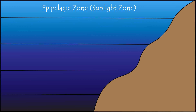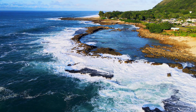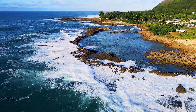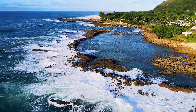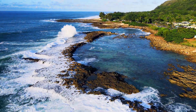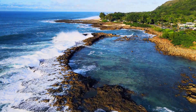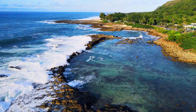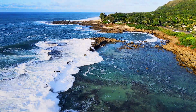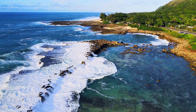The first layer of the ocean is called the epipelagic zone, or the sunlight zone. This is the top layer of the ocean, extending from the surface down to around 200 meters or 656 feet. It receives the most sunlight and is where most of the ocean's plant and animal life, including phytoplankton and fish, are found.